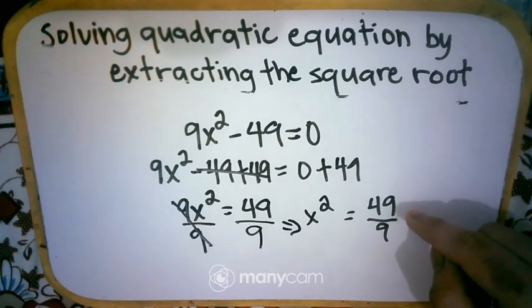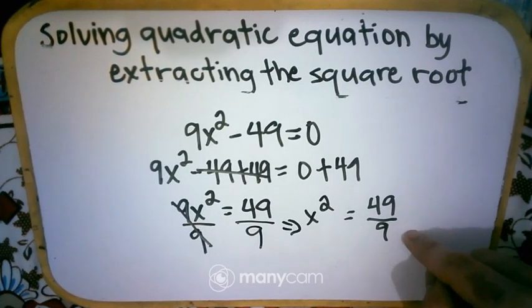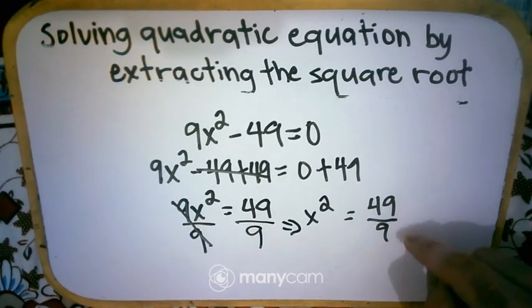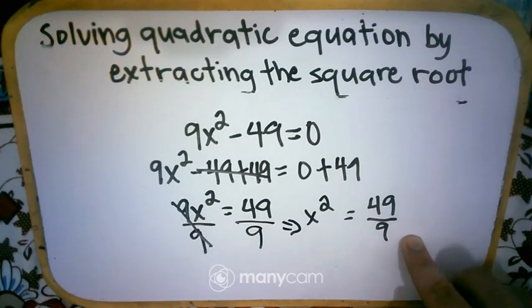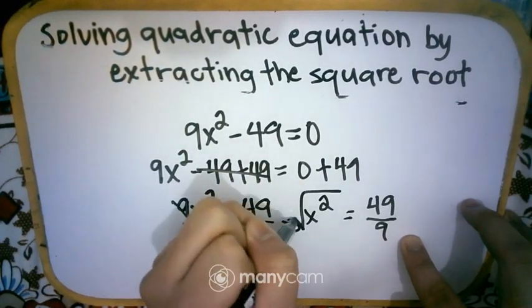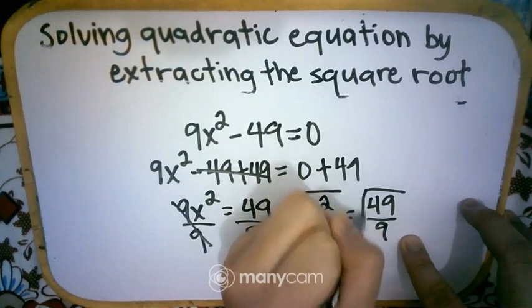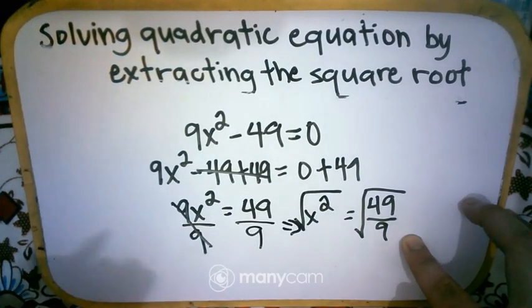Now, 49 and 9, they have similarity. Their similarity is they are both perfect squares. Therefore, when we get the square root of this and get the square root of this, we can simplify that.